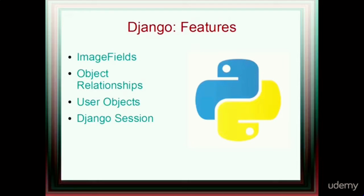We'll look at user objects and how to create users — signing up users for a particular site, allowing those users to log in, and only allowing them to access the appropriate data. We'll also look at the Django session, a way to store values that persist from a user's login session and are deleted when that user logs out or exits the page.